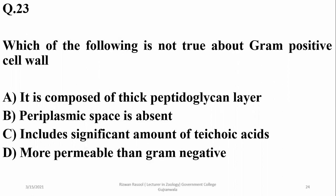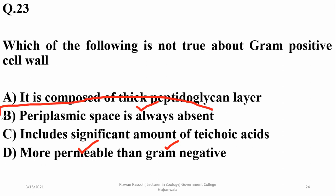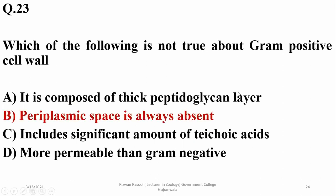Alpha is not the answer. Periplasmic space is usually absent in gram positive bacteria — that is also true. It includes a significant amount of teichoic acids — yes, that is true. As for gram positive cell wall being more permeable than gram negative bacteria: the better answer is that stating periplasmic space is always absent would be a wrong statement, so the right option is beta.